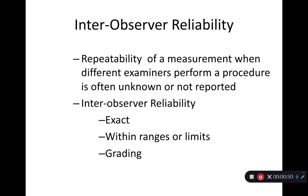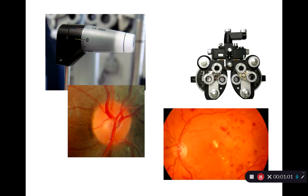Inter-observer reliability can be classified by a couple different systems: exact, within a range or within limits, or grading different types of disease. That can be used for everything we do in clinic — measuring the pressures of your eyes for glaucoma, refractive error measurements like myopia or astigmatism, measuring cup-to-disc ratios for glaucoma, or grading disease classification like diabetes and how much retinopathy is present in the eye.